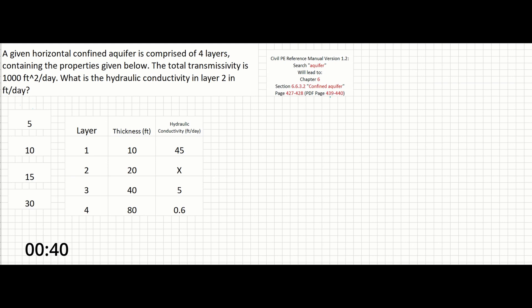On page 427, aquifer transmissivity is given as t equals k times b in feet squared per second. What's given here is actually feet squared per day, but we can use that too as long as we remain consistent throughout the problem.